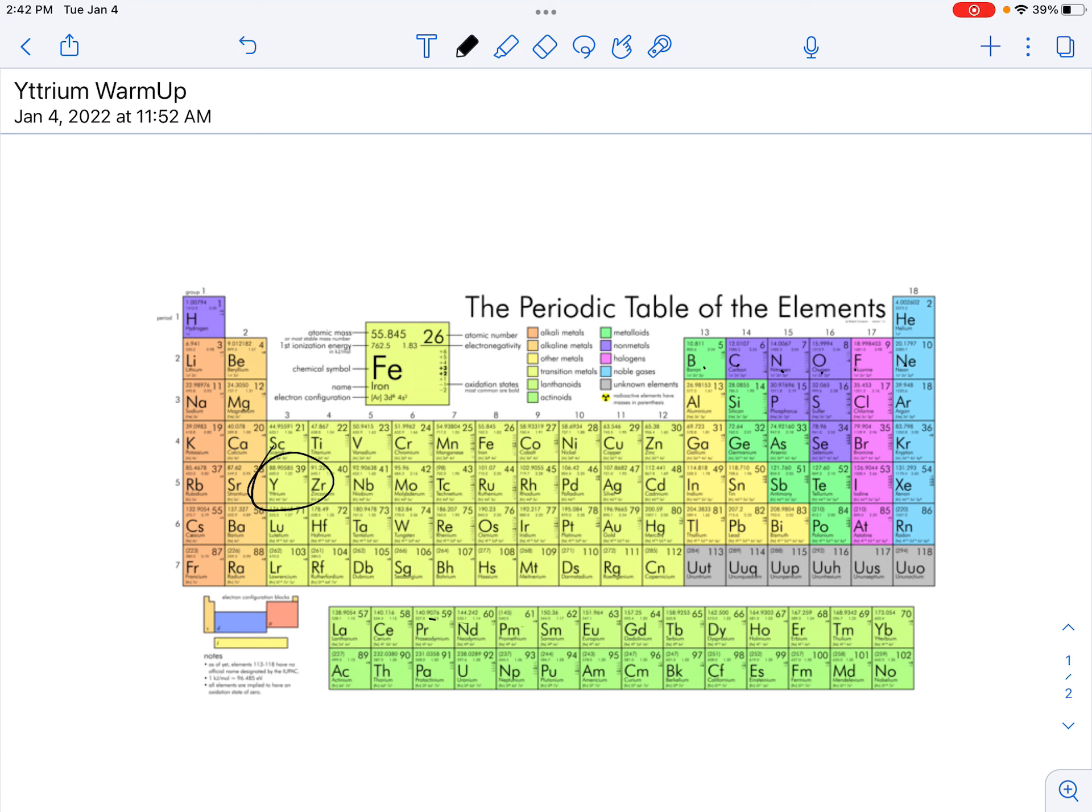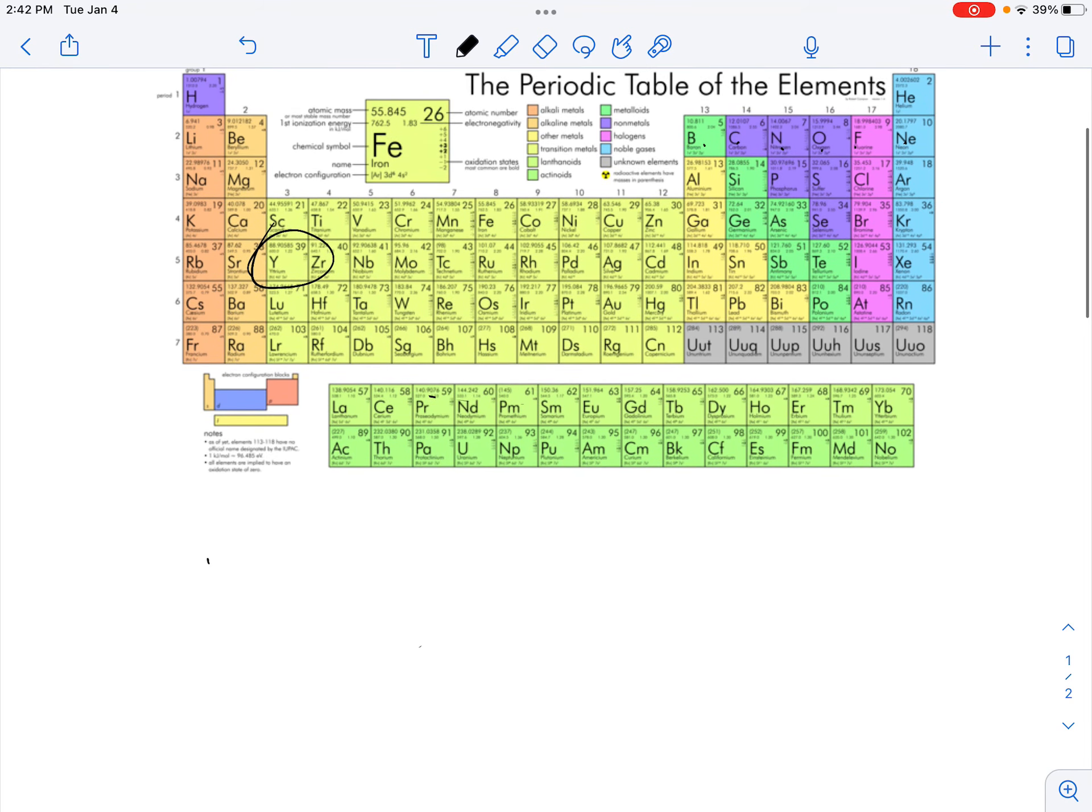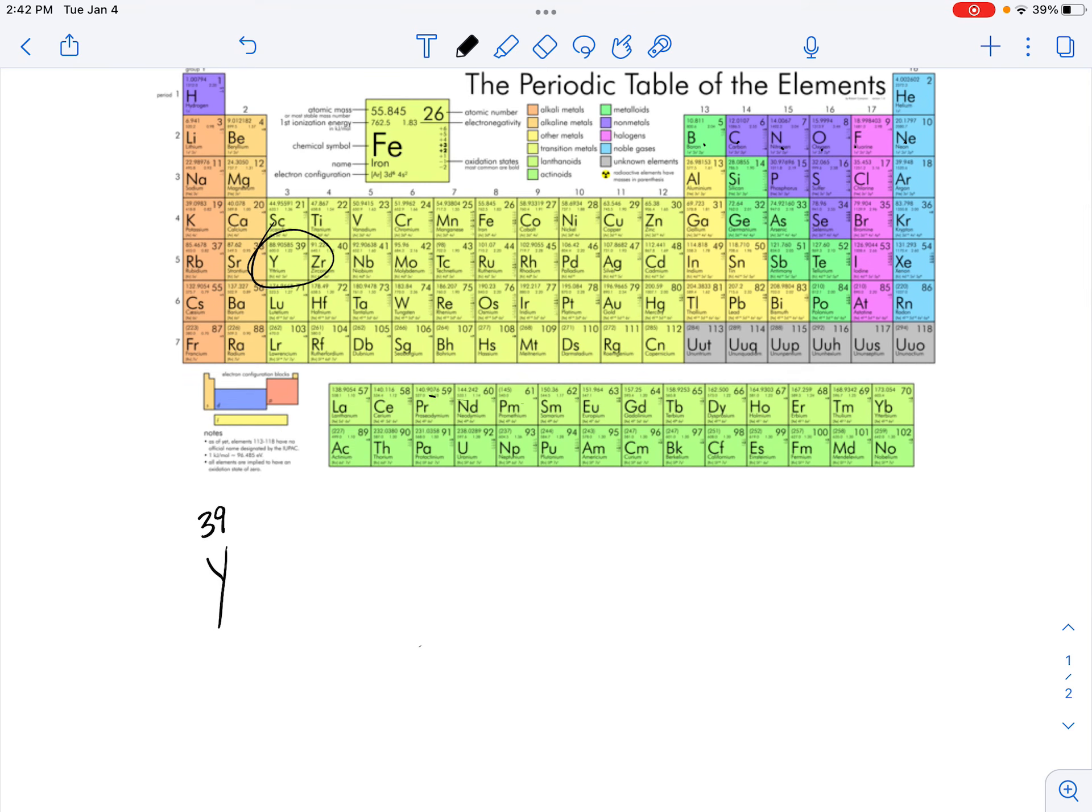And so this is really just a review of unit 7. So what do we know about yttrium? We know the symbol is Y, the atomic number is 39, and the atomic mass, it's hard to read, it's pretty pixelated here, is 88.9.